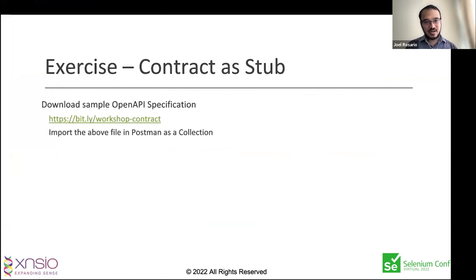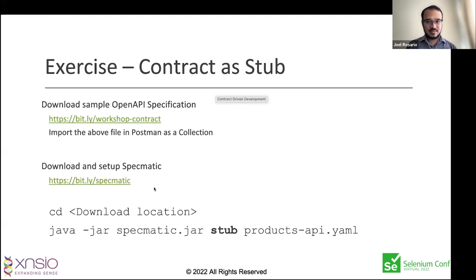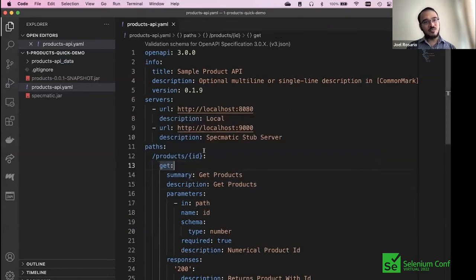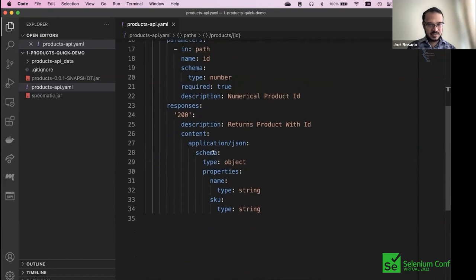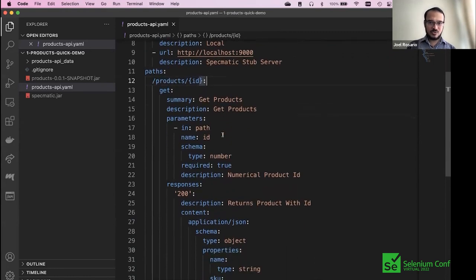I'd like you to download this contract, download Specmatic, and get this thing running. In the interest of time, I'll carry on. We have a small contract here. This is a product endpoint — /products/{id} — where the id is parameterized as a number. It's compulsory. When the application receives this request, it's supposed to get this response back — the response has to be a JSON object with a name and a sku, both strings.